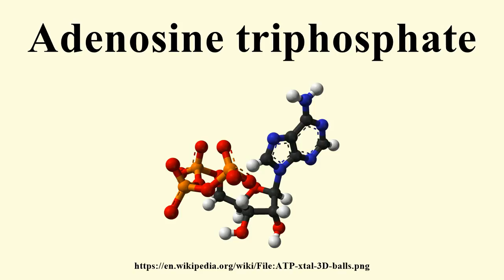It was first artificially synthesized by Alexander Todd in 1948. ATP consists of adenosine, composed of an adenine ring and a ribose sugar, and three phosphate groups. The phosphoryl groups, starting with the group closest to the ribose, are referred to as the alpha, beta, and gamma phosphates. Consequently, it is closely related to the adenosine nucleotide, a monomer of RNA.